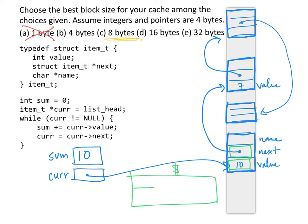So here in our cache we would have a single block, and the first four bytes would be the value, and the second four bytes would be the next pointer. And that would mean that we would have a miss here, followed by a hit here for every iteration of the for loop. So eight bytes is looking pretty good.